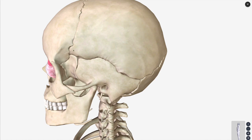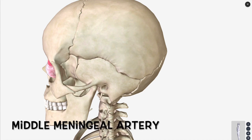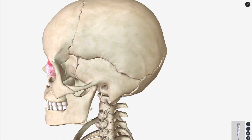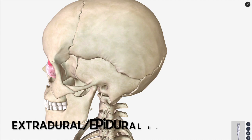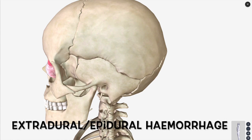Underneath this pterion is where your middle meningeal artery runs. So the middle meningeal artery, if that ruptures, you're going to get an extradural, otherwise called an epidural hematoma.